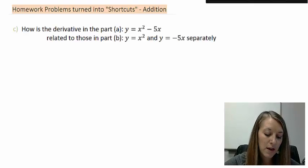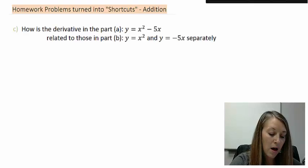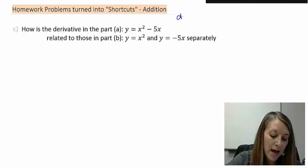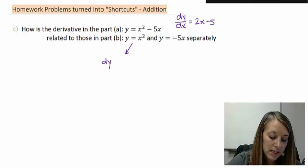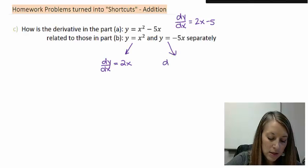How is the derivative that we came up with in part A of y equals x squared minus 5x? Remember that derivative came up to be 2x minus 5. Compare with the derivative for these separately. Where our y equals x squared, the derivative piece was 2x. And y equals negative 5x, the derivative piece is negative 5.